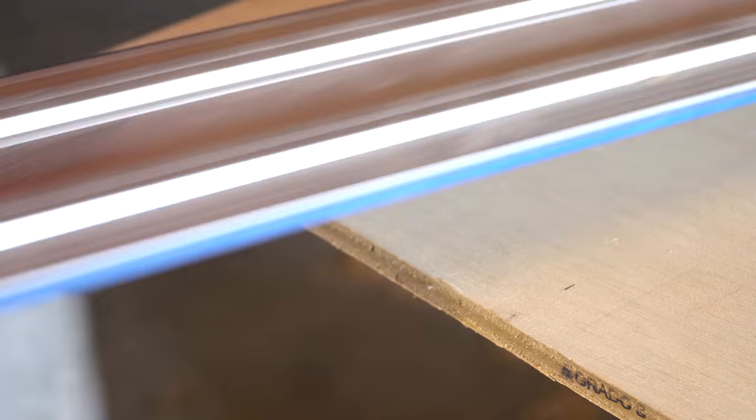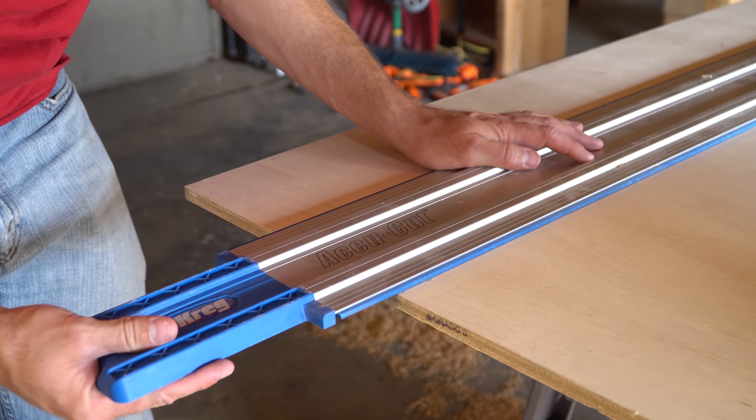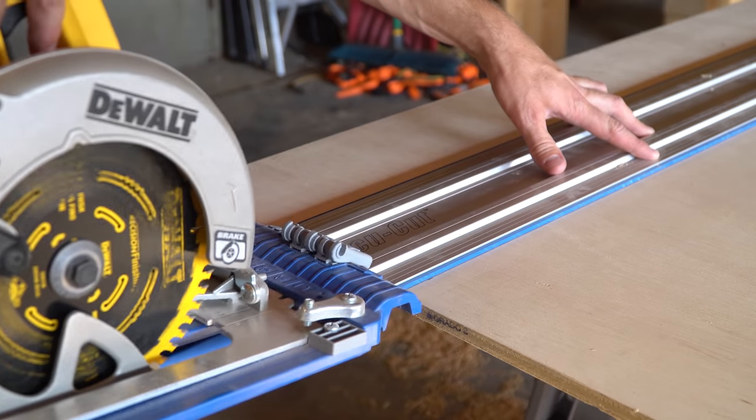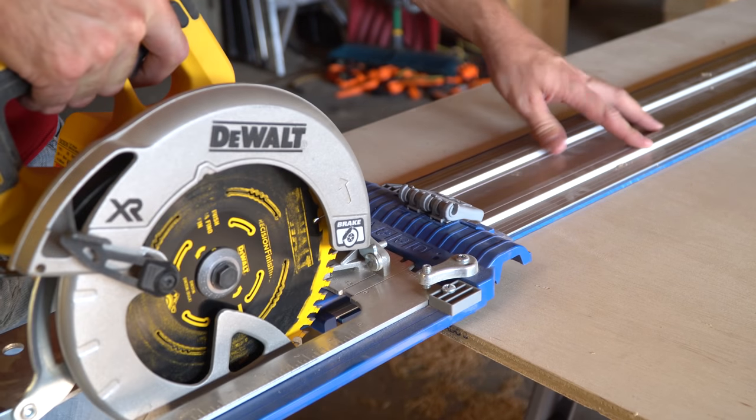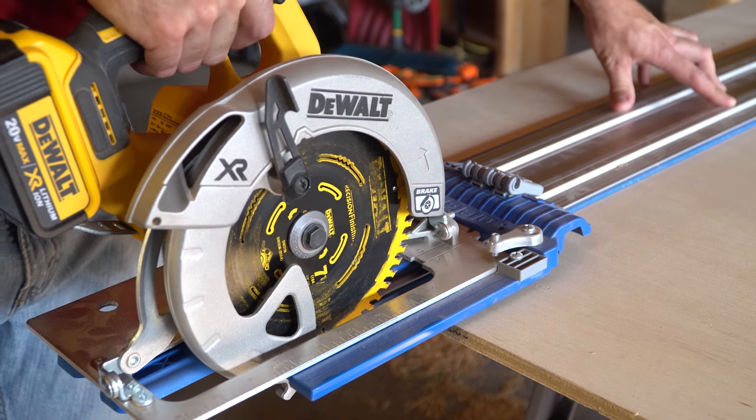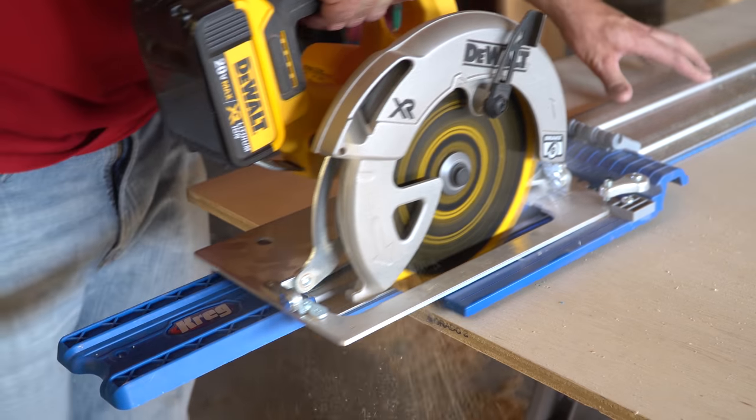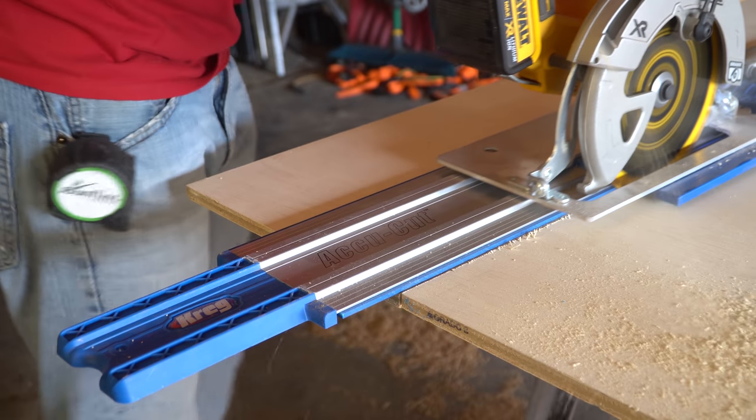As with most projects, the first step is cutting the material to the right size pieces. Since this is primarily a plywood project, that means I needed to start by breaking down a full-sized sheet. Craig Tools helped me out with this project and I used their AccuCut Circular Saw track system to make short work of the full-size plywood sheet.